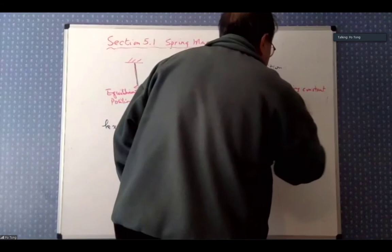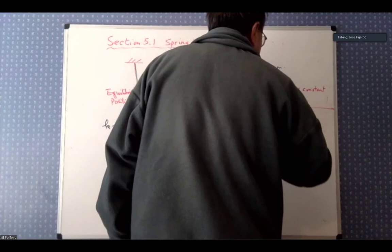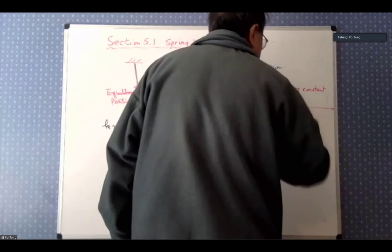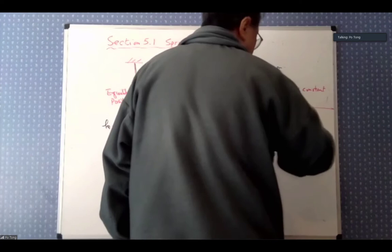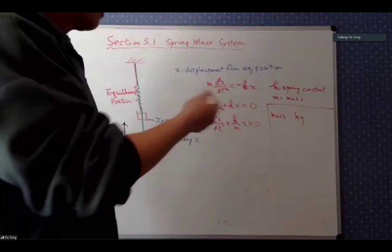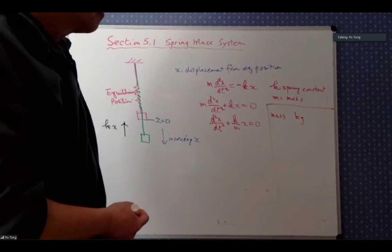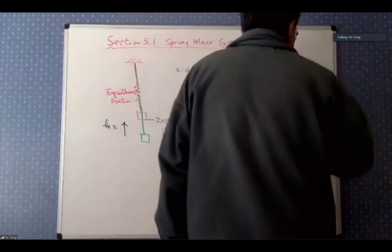Let me talk about units briefly. In the metric system, mass is in kilograms and one kilogram weighs 9.8 Newtons on Earth. In the British system, weight is in pounds, and there is a unit for mass called the slug.